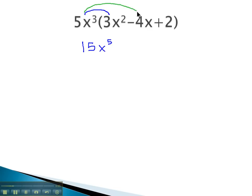Then we'll distribute the 5x³ onto the negative 4x. 5 times negative 4 is negative 20. Assuming an exponent of 1, when we add the exponents on x, 3 plus 1 gives us x to the 4th.